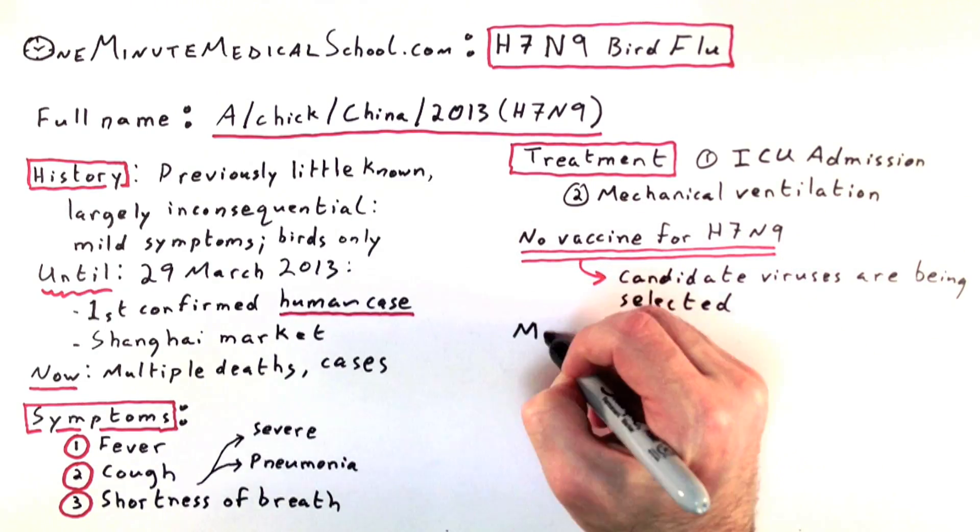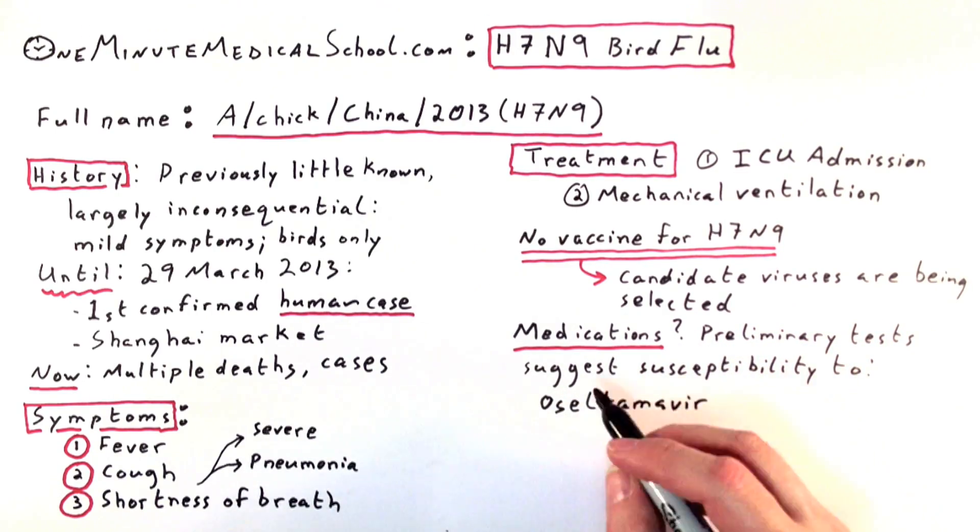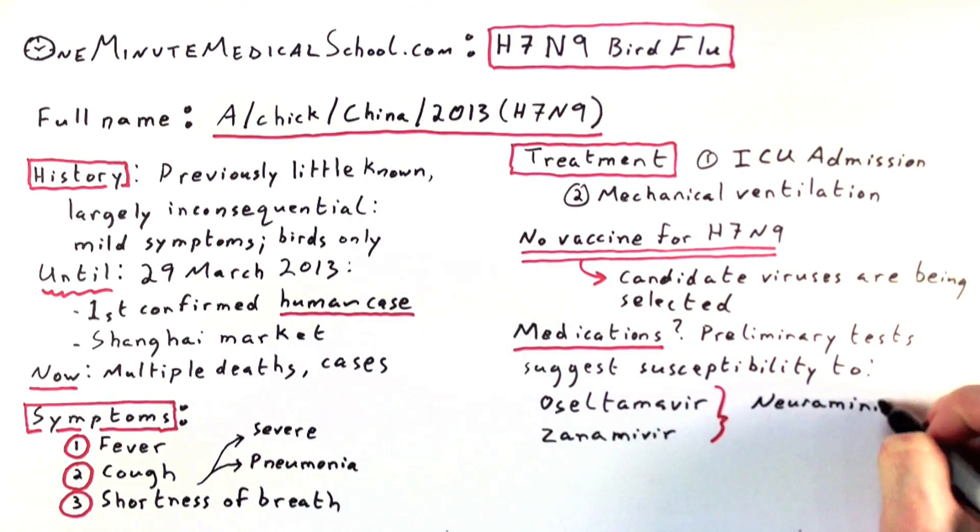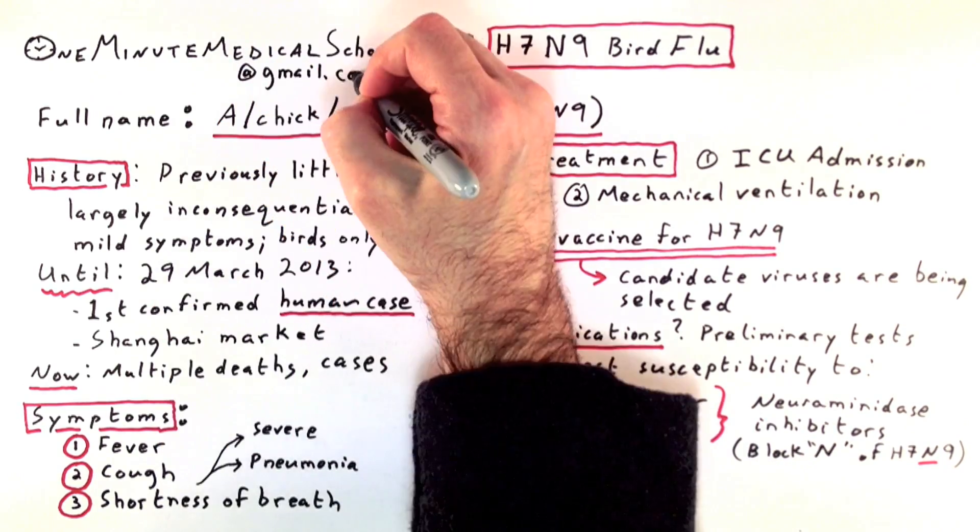Medications which may treat the virus, some testing suggests ozeltamivir and zanamivir. These are neuraminidase inhibitors. Right now, the World Health Organization has not suggested that any travel or trade plans be restricted.